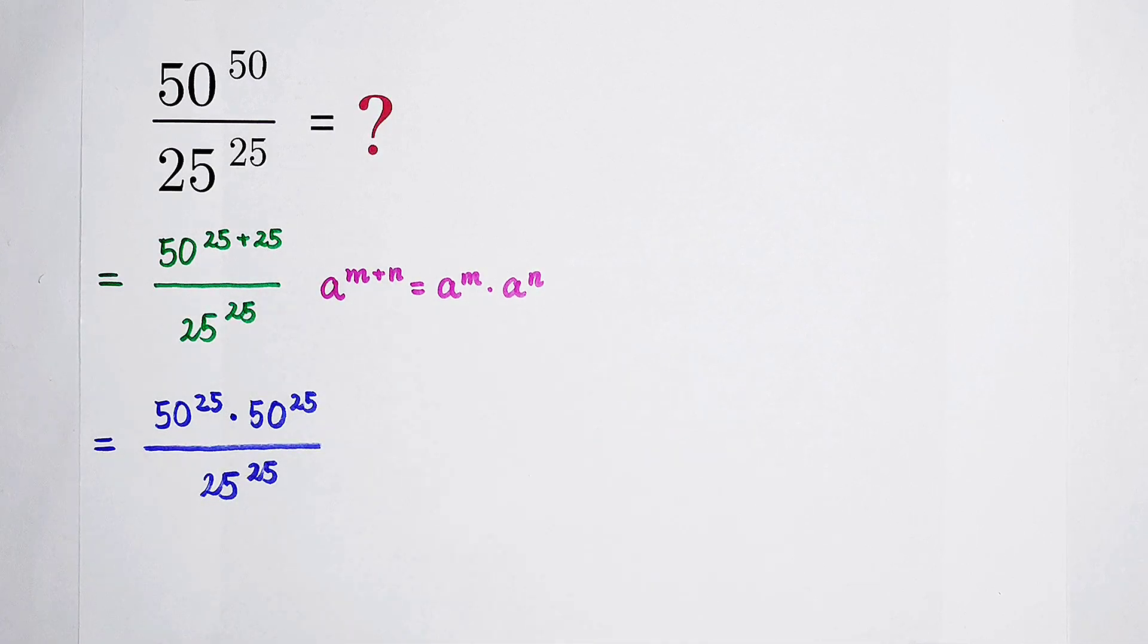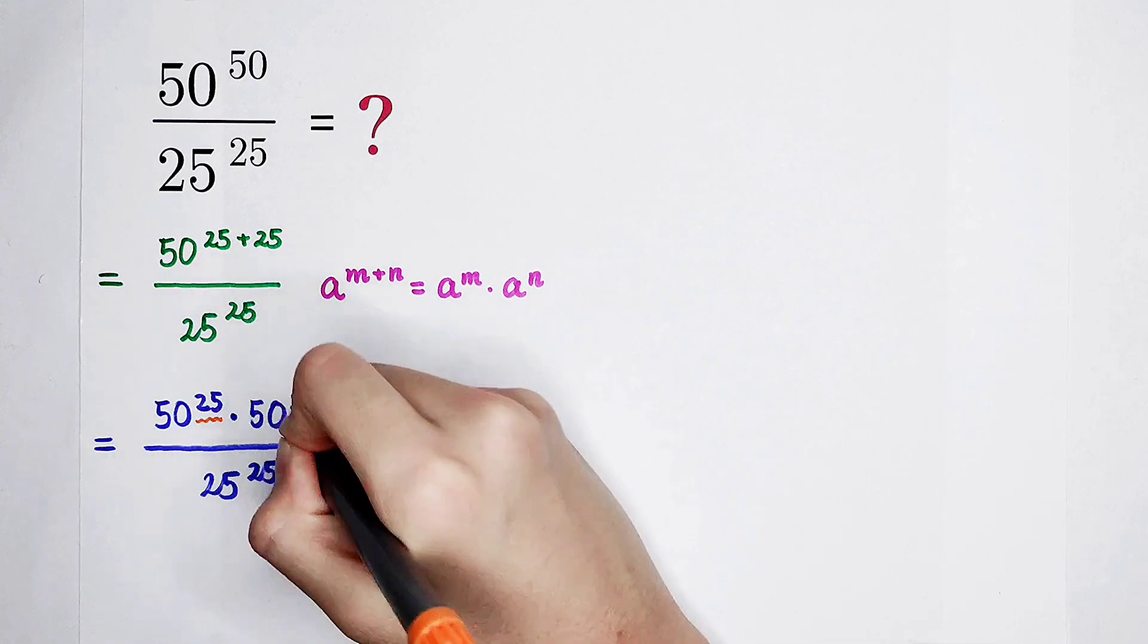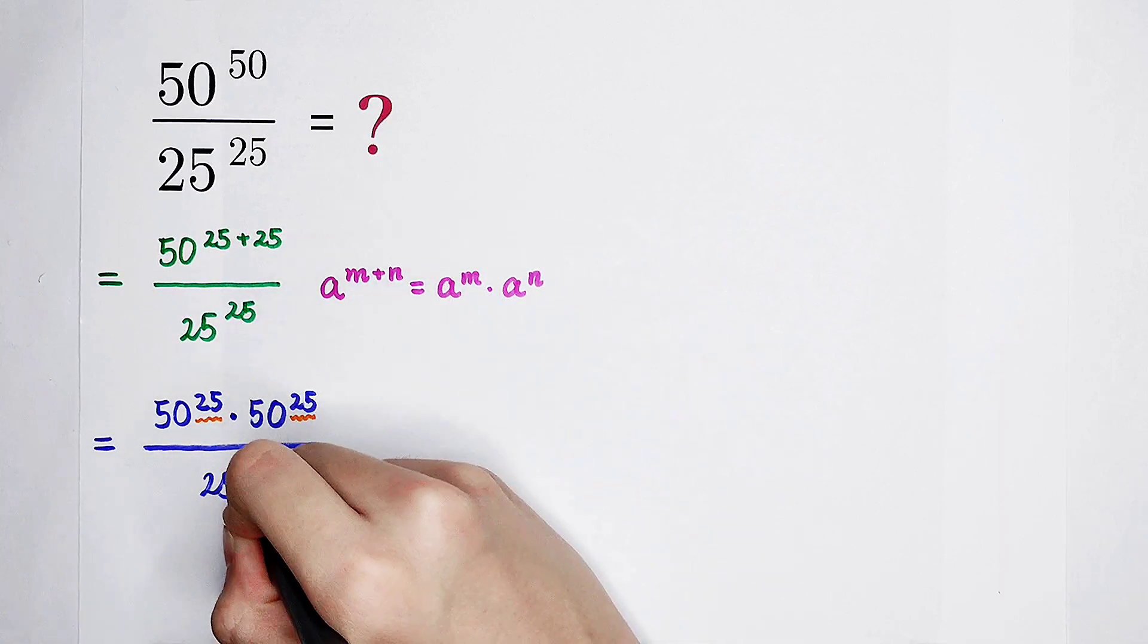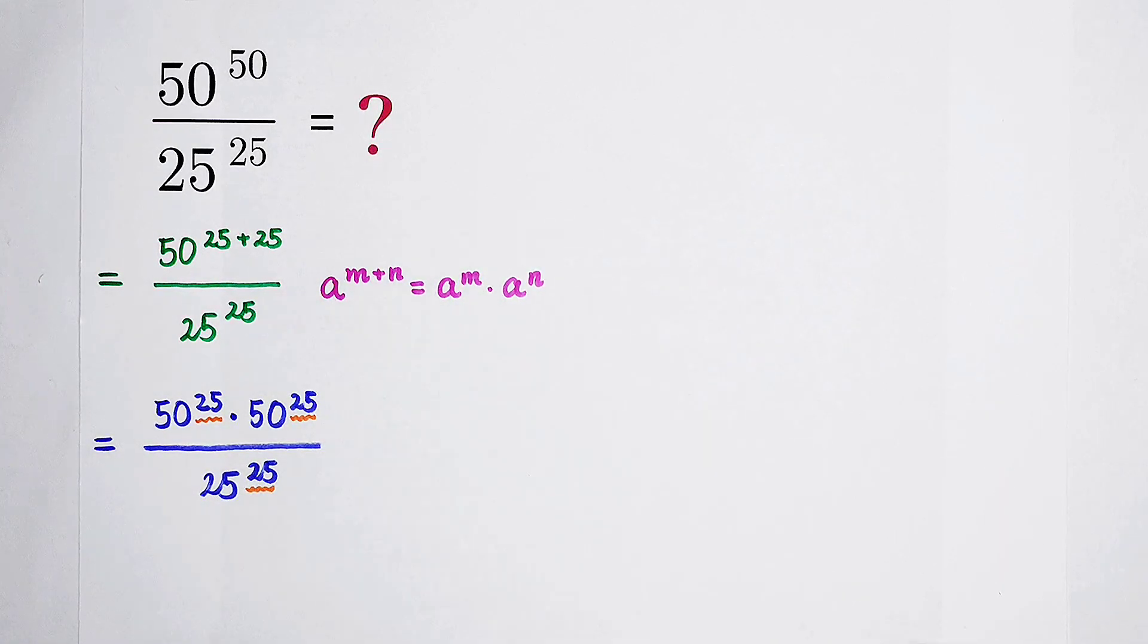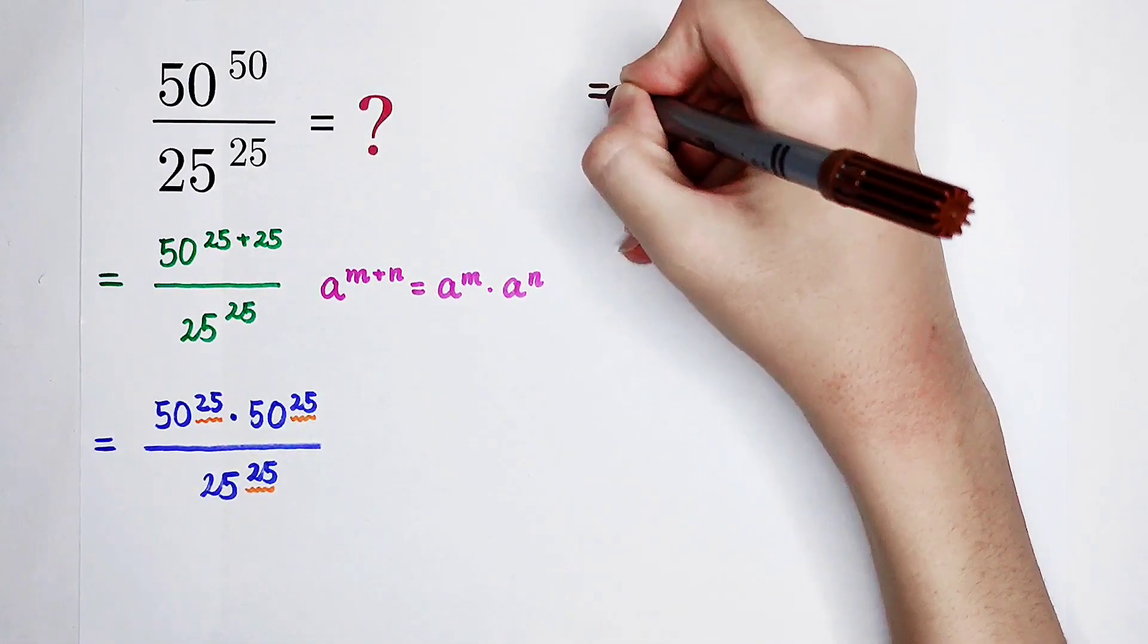All divided by 25 to power 25. Still here. The exponent 25, 25, and 25. Almost successful.